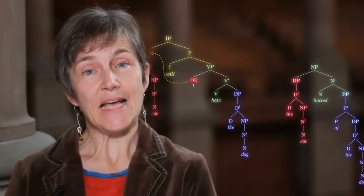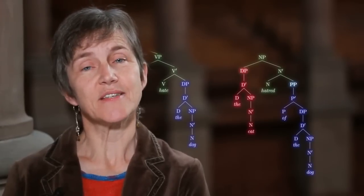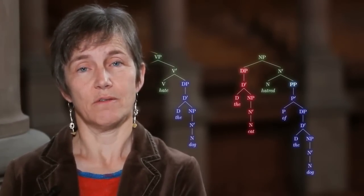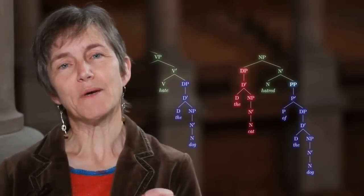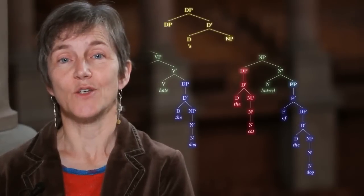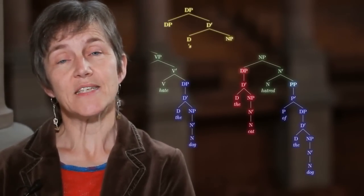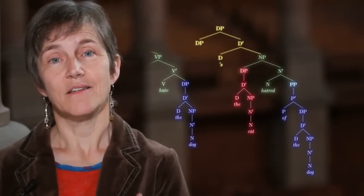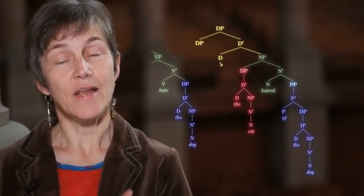We build up the nominal in exactly the same way. You have an elementary tree for the noun with slots for its arguments — in this case a PP and a DP — and you put elements into those argument slots. Just as the VP combined with the elementary tree associated with I, so this noun phrase is going to combine with the elementary tree associated with the determiner D, giving us a structure projected by D, a D-bar, with the determiner and the noun phrase.